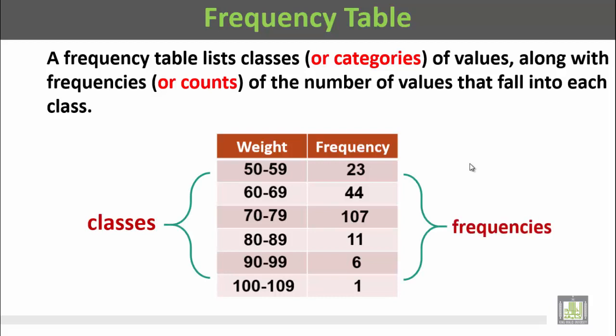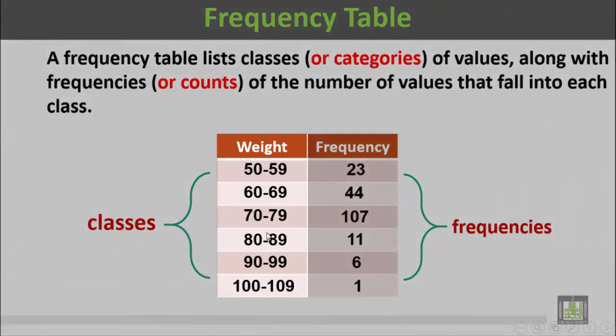For example, this table represents the weight classes and the frequency of each class. The first class includes those who have their weight from 50 to 59 kg. Their frequency is 23 persons.